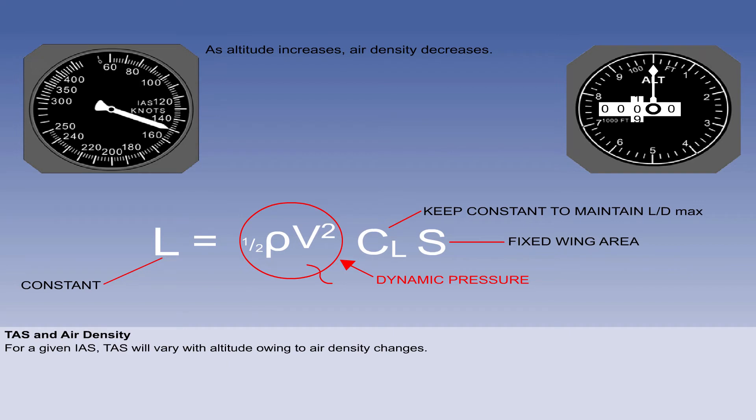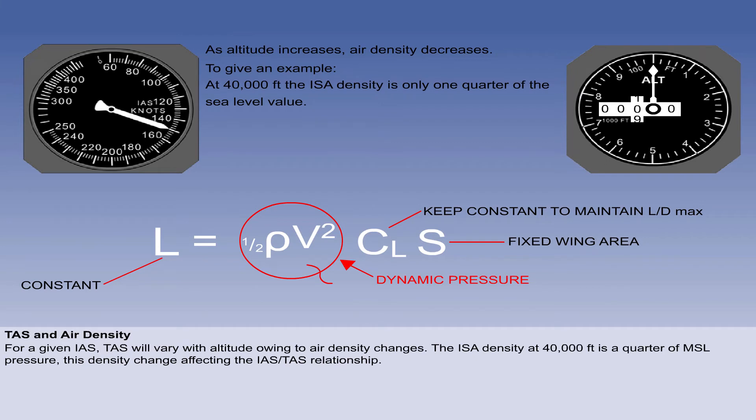There is a direct relationship between density and the TAS that an aircraft will achieve for a given IAS, usually in connection with a change in altitude, since density decreases as altitude increases. Considering the ICAO standard atmosphere, or ISA, in which the density at 40,000 feet is a quarter of that at mean sea level, we can see the changes in relationship that occur between TAS and IAS because of density change.